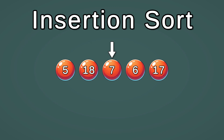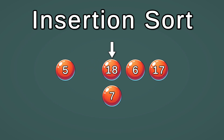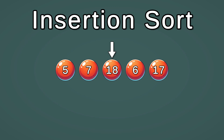So now we're looking at 7. And 7 is smaller than 18, so we shift 18 to the 7 position. Now we check if 7 is less than 5, which it's not. So we put it in the position where 18 was. Now we can go to the next position.